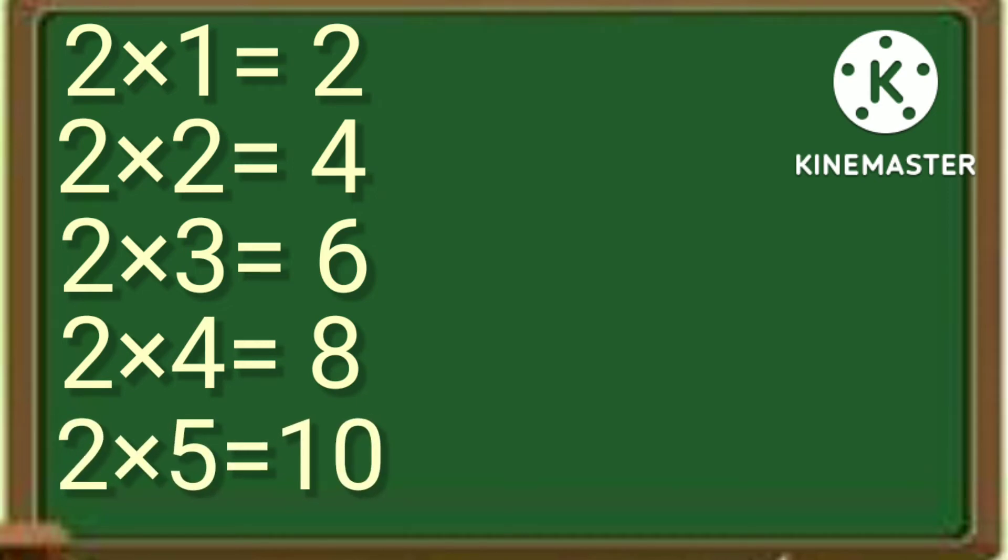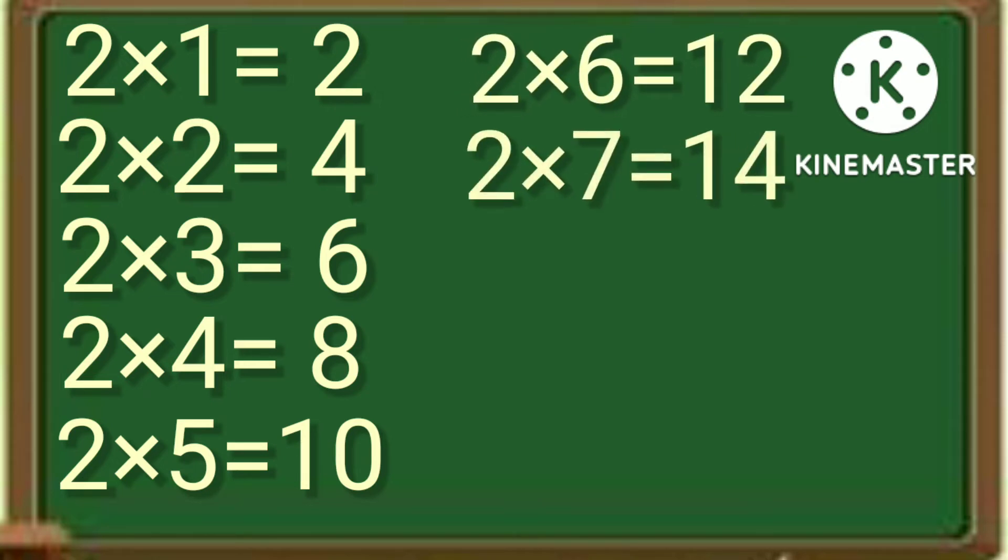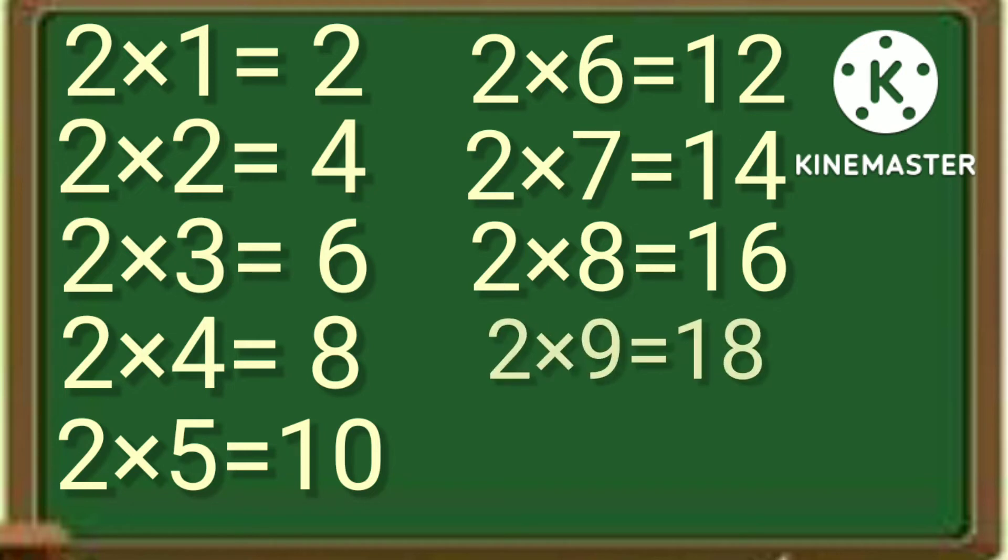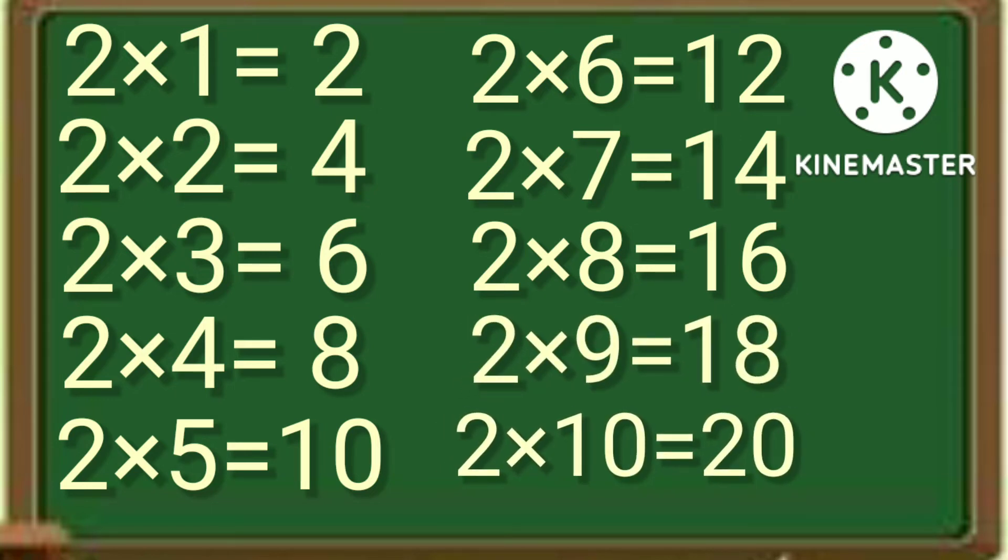2 times 5 is 10, 2 times 6 is 12, 2 times 7 is 14, 2 times 8 is 16, 2 times 9 is 18, 2 times 10 is 20.